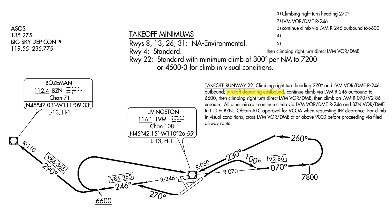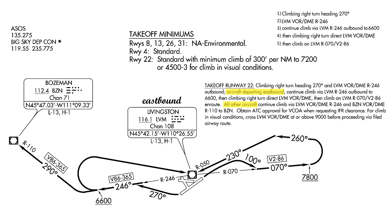At 6,600 feet, we continue the climb turning right, direct to the Livingston VOR. Once passing the VOR, we continue our climb along the 070 radial en route. The procedure also has separate steps for all other aircraft, which terminate at the Bozeman VOR to the northwest. Essentially, the procedure ends at the Livingston VOR on the 070 radial if eastbound, or at the Bozeman VOR for everyone else. Usually these options are handled with different transitions, but there are no separate transitions here — the pilot makes the decision. Because of this, there's no way to program either option into the departure procedure itself.